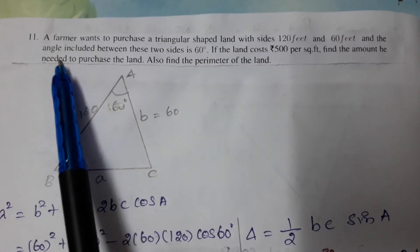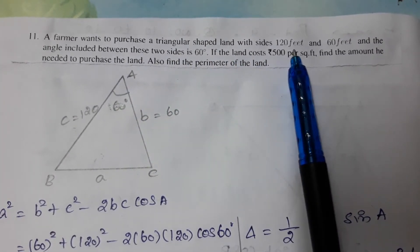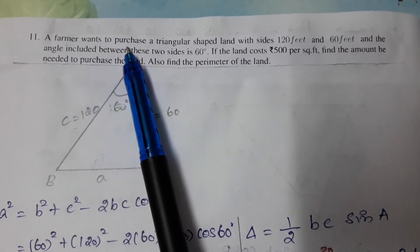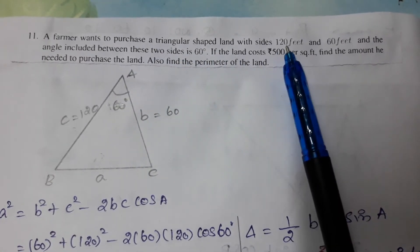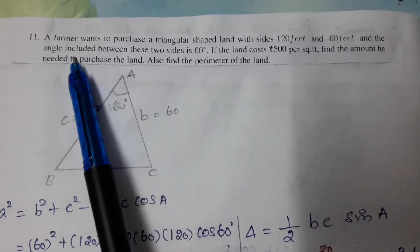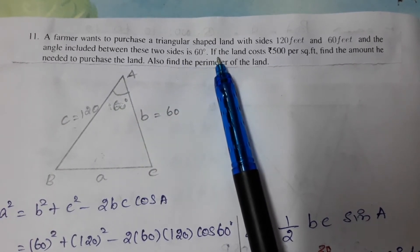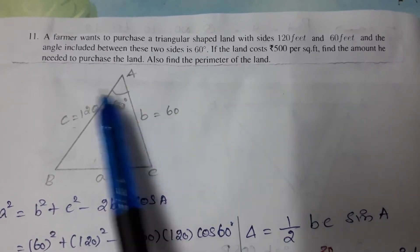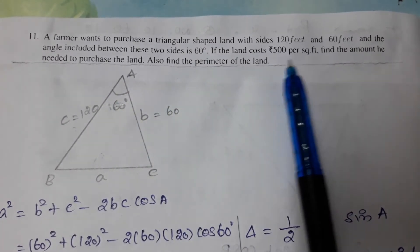Question number 11: A farmer wants to purchase a triangular-shaped land with sides 120 feet and 60 feet. The angle included between these two sides is 60°. The land costs Rs. 500 per square feet. Find the amount needed to purchase the land and also find the perimeter.